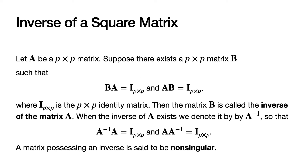Next, let's define what the inverse of a square matrix is. Let bold A be a P by P matrix — again, this is a square matrix. Suppose that there exists a P by P matrix, which we'll denote for now by bold B, such that B times A is equal to the P by P identity matrix, and A times B is equal to the P by P identity matrix as well.